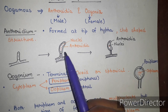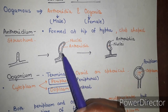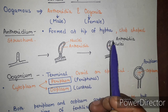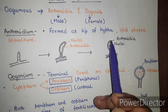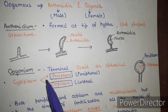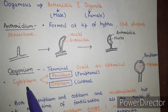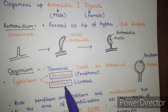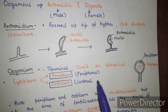At the time of fertilization, all the nuclei of the anthridium except one degenerate. Anthridia are club-shaped with a nucleus in the center. The oogonium is terminal, ovoid or spherical in shape. The cytoplasm of the oogonium gets differentiated into periplasm — the peripheral cytoplasm — and ooplasm, which is the central cytoplasm.